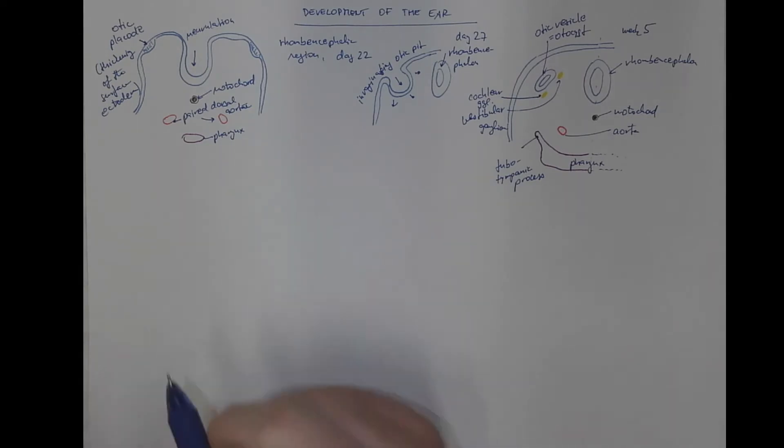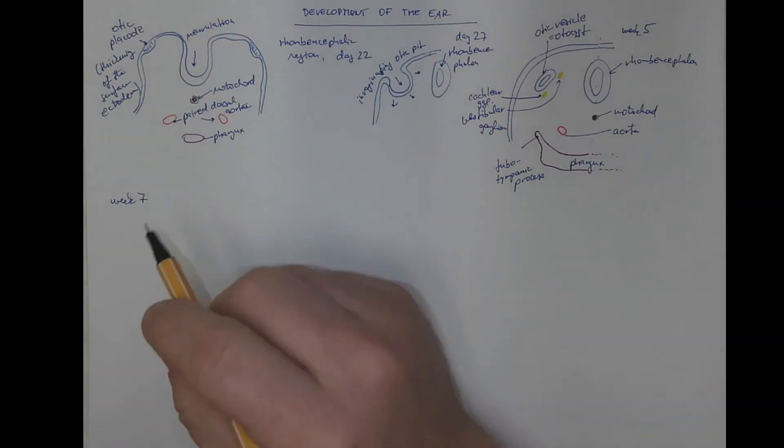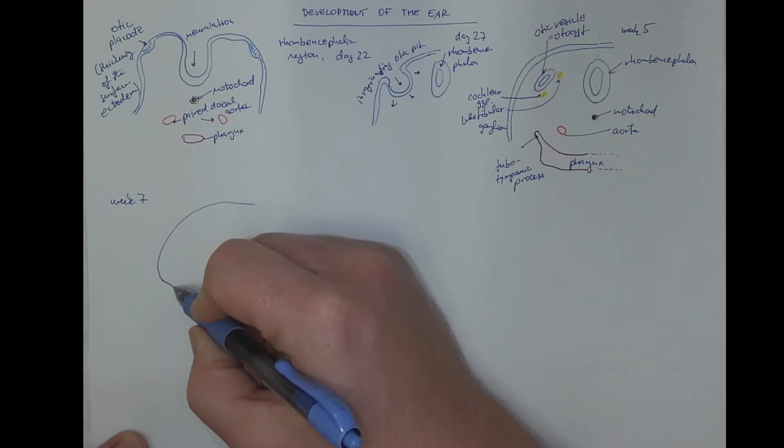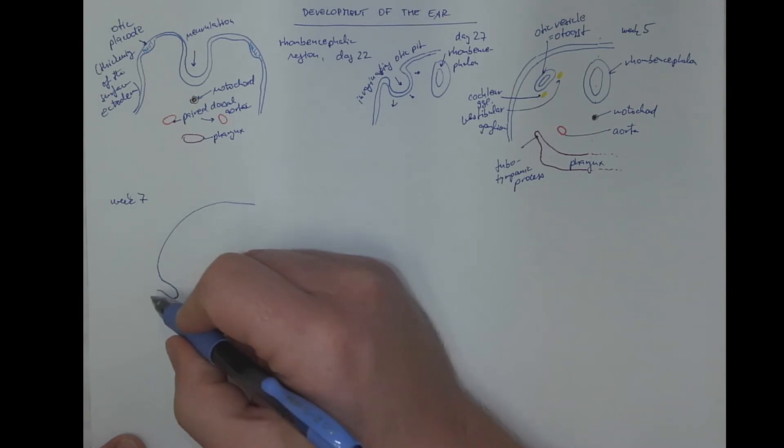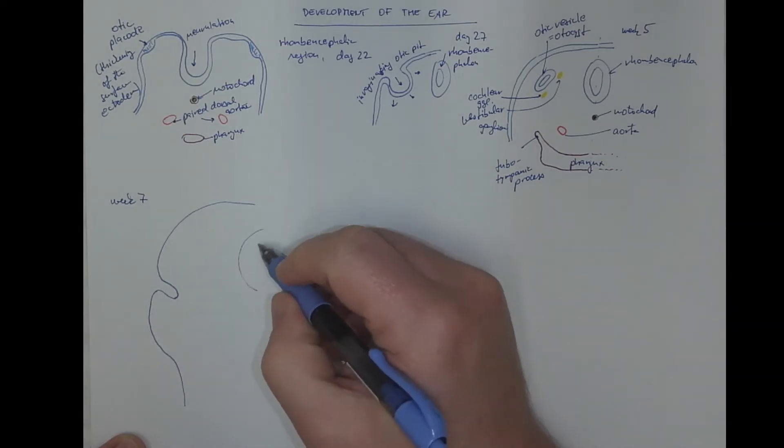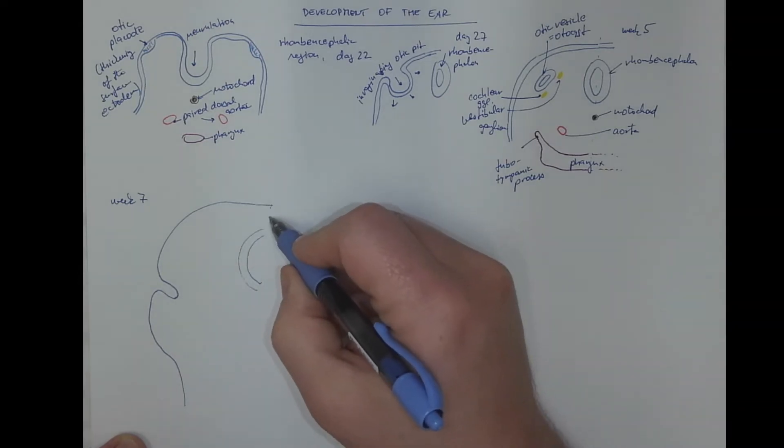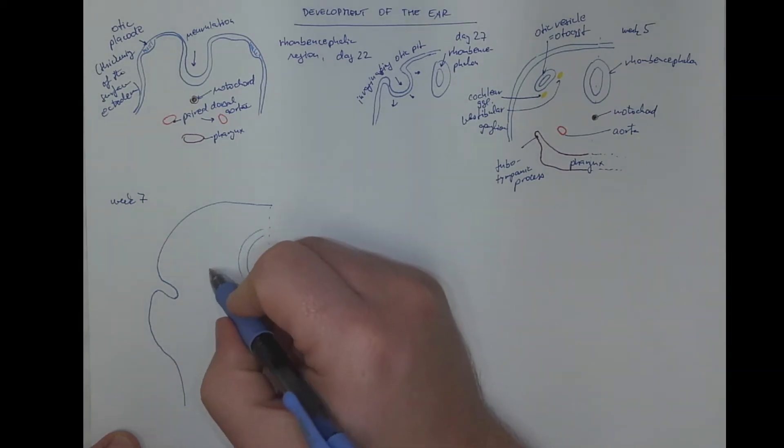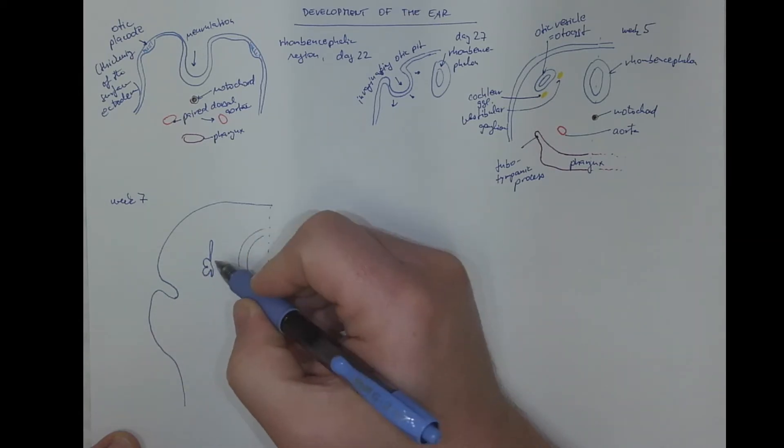Later on, in the seventh week, a transverse section through the head would demonstrate this. The ectoderm performs an invagination here. Here will be the neck. This would be the rhombencephalon. Again, I will draw only half of the reality. And the otocyst would differentiate into the membranous labyrinth. So we got the endolymphatic duct here, the utricle and the saccule, and the cochlear projection.